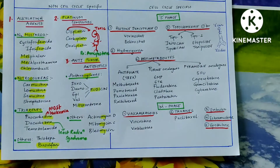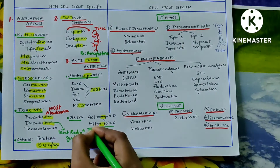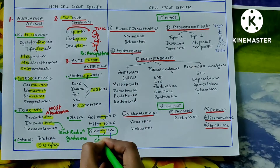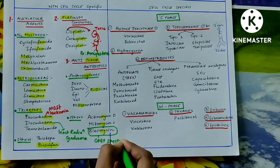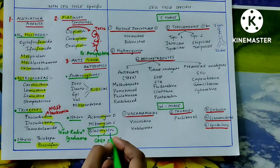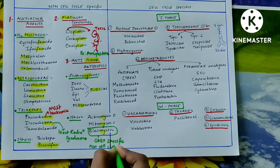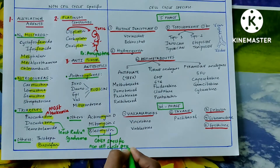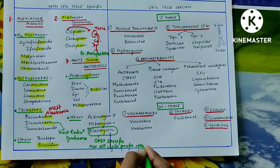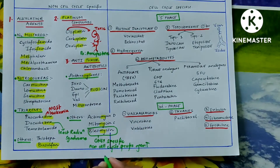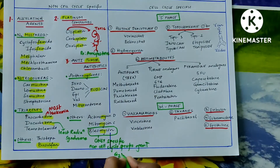Now let us discuss bleomycin in detail. If asked about the only specific anti-cancer drug in the non-cell cycle specific classification, the answer is bleomycin. Bleomycin is specific to some extent because it acts on the G2M phase of the cell cycle — it inhibits the G2M phase.